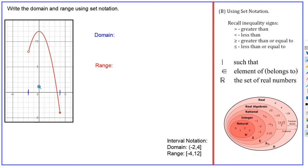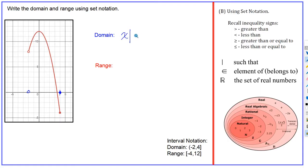If you were to graph this as an inequality using just one variable, it would have a hollow dot here and a solid dot here, and you'd write that inequality. For set notation when we're doing the domain, we talk about the x-value, so we write x, then we use this symbol for 'such that,' and now we write our inequality. The lower boundary is minus two and that point is not included, so we use just less than, not less than or equal to.